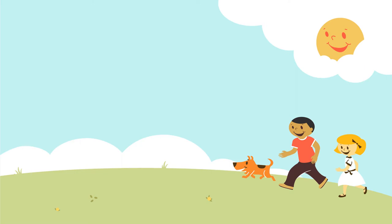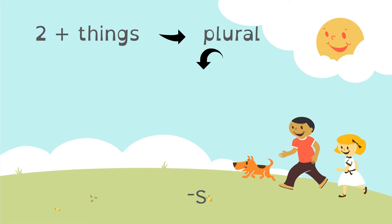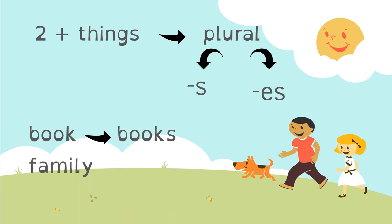So in English, when we talk about two or more things, we say that is a plural. And how to make plural in English? We have to add the letter S at the end of the word, or the letters ES. So for example, book becomes books, or family becomes families.